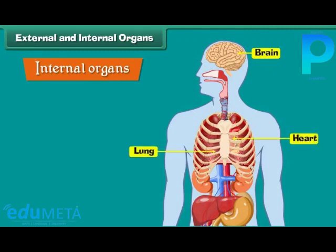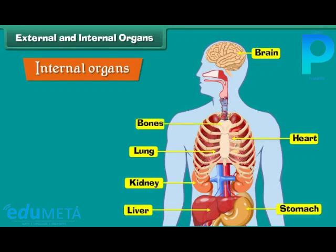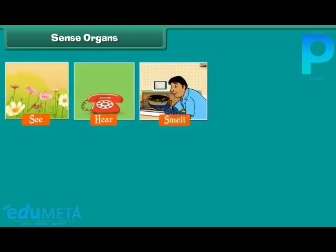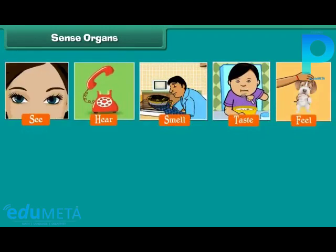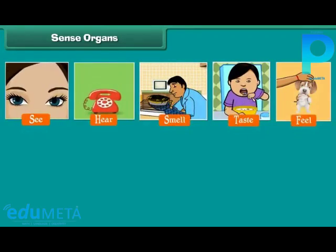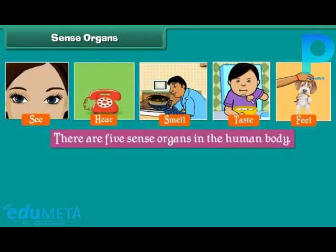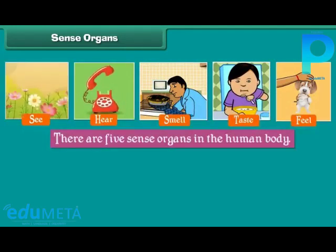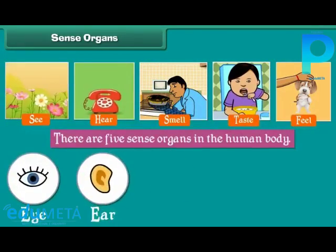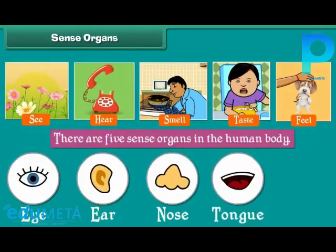The organs that cannot be seen from outside are called internal organs — for example, brain, heart, lungs, stomach, liver, kidneys, and bones. The organs that help us to see, hear, smell, taste, and feel are called sense organs.